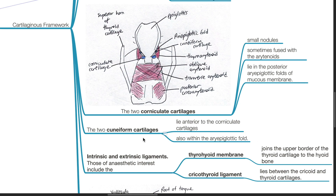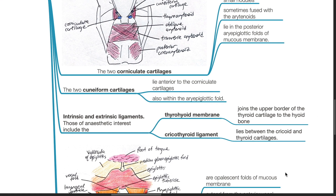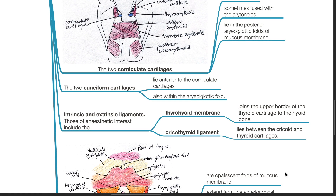Intrinsic and extrinsic ligaments of anesthetic interest include the thyrohyoid membrane, which joins the upper border of the thyroid cartilage to the hyoid bone, and the cricothyroid ligament, which lies between the cricoid and the thyroid cartilages.